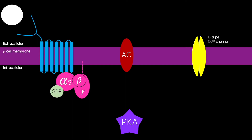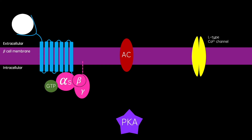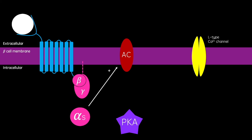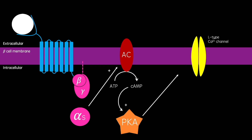Beta-1 adrenoceptors are GS protein coupled, meaning the activation by beta-1 agonists results in the activation of adenylyl cyclase, which converts ATP to cyclic AMP. This second messenger goes on to activate protein kinase A, which goes on to phosphorylate L-type calcium channels, causing them to remain open for longer at the beginning of diastole. This results in increased calcium entry into the cardiomyocytes, and therefore more calcium available to facilitate the formation of actin-myosin cross-bridges, increasing cardiac output.